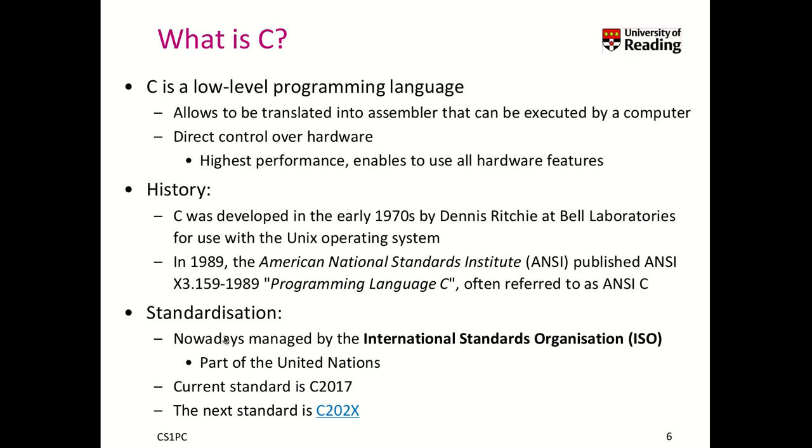Nowadays, we have a standardization organization, that is the International Standards Organization, ISO, that is part of the United Nations, that takes care of the standardization of C and C++. And our current standard is C 2017. But our next standard will be something like C 2020.